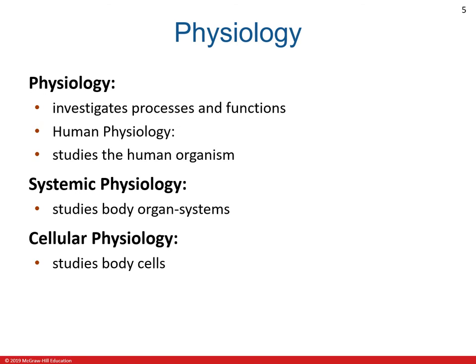Human physiology is the study of the human organism, whereas cellular physiology and systemic physiology are subdivisions that emphasize a specific organizational level — cells for cellular physiology, and the body organ systems for systemic physiology.